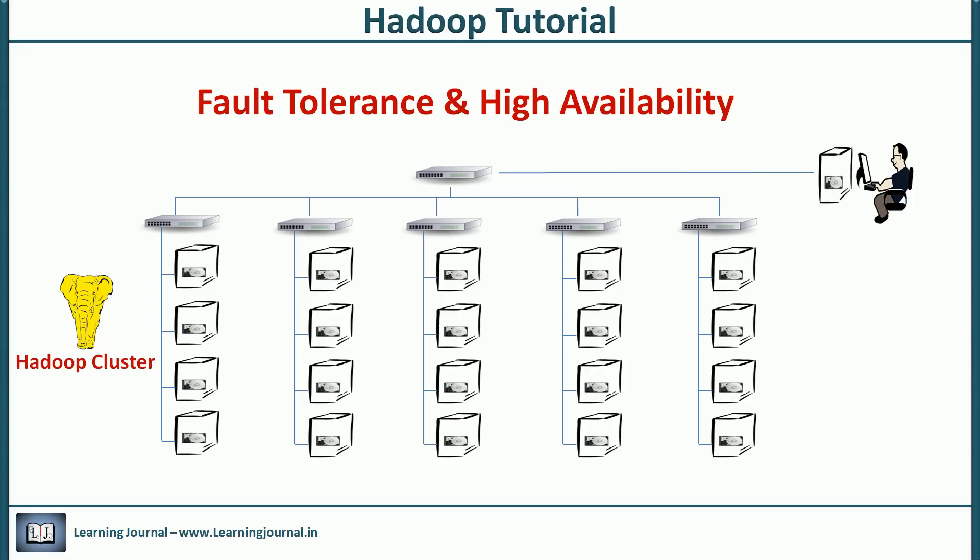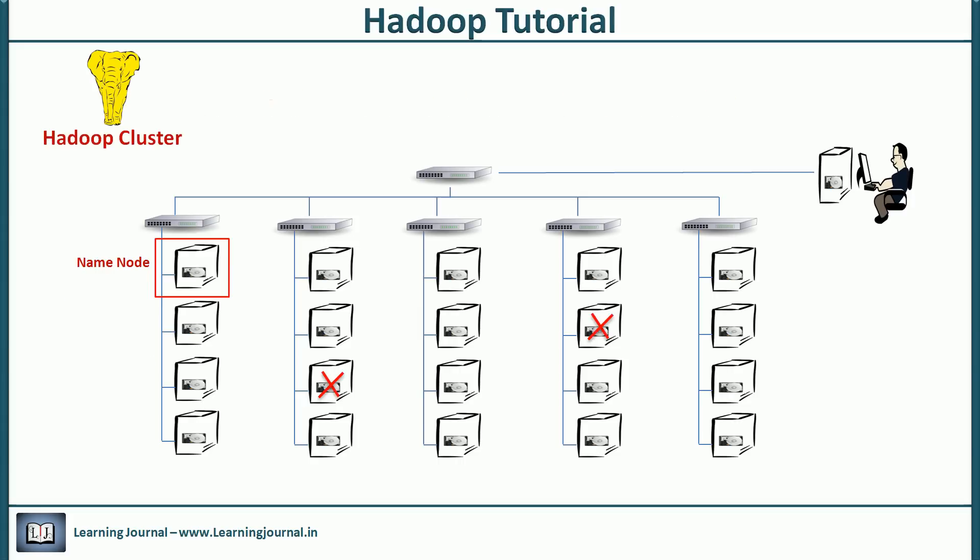Let me ask you a simple question. If some data node fails, what will happen to your file? I mean your data file was broken into blocks and you stored them on different data nodes. If one of such data node is not working, how will you read your file? You can't read it, right? Because you lost some part of your file with that faulty machine.